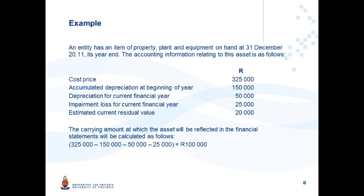Let's look at an example. An entity has an item of property, plant and equipment on hand. The accounting information relating to this asset includes: cost price, accumulated depreciation at the beginning of the year, depreciation for the current year, impairment loss for the current year, and an estimated current residual value.